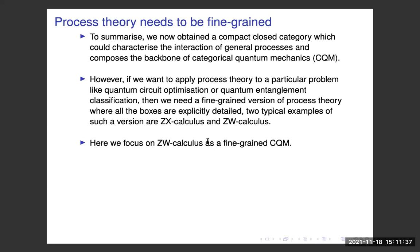To summarize, we now have a compact closed category which can capture the interaction of general processes and their composition. This forms the backbone of categorical quantum mechanics (CQM). However, if we want to apply process theory to solve particular problems like quantum circuit optimization or quantum entanglement classification, we need a fine-grained version. Two typical examples are the ZX calculus and the ZW calculus — here we focus on the ZW calculus.